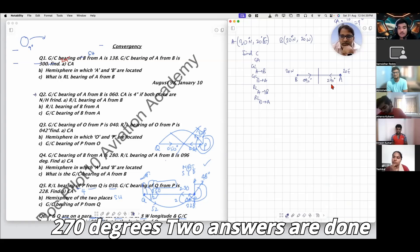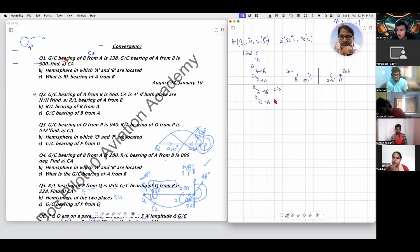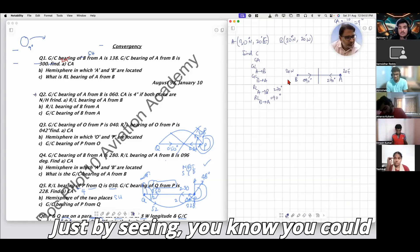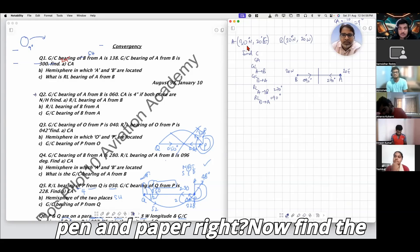From line A to B is 270, B to A is 090. You could have done this without pen and paper. Now find the convergency.